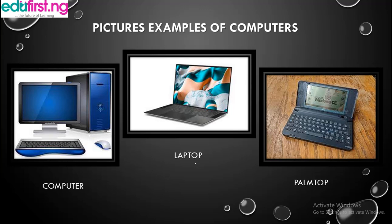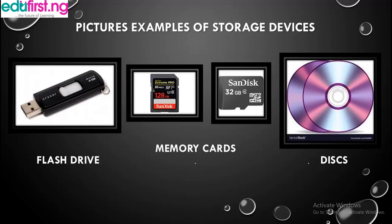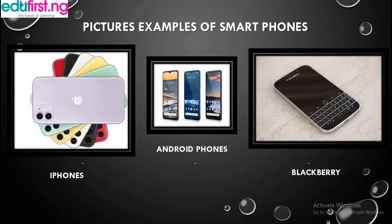Here are pictures of examples in each category. Computers include the desktop computer, laptop, and palmtop. Audio or video gadgets include the home theater, iPod, and handy cam. Storage devices include the flash drive, memory cards, and disk. Smartphones include the iPhone, Android phones, and BlackBerry.